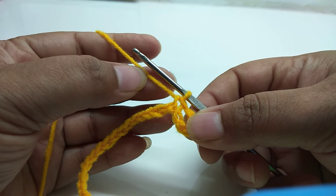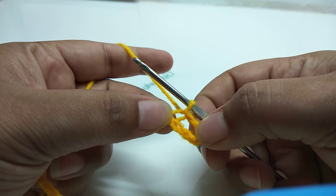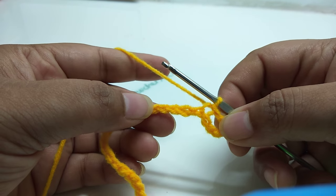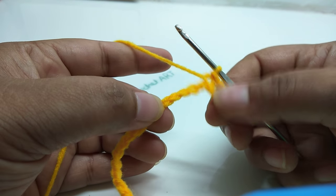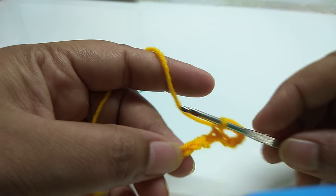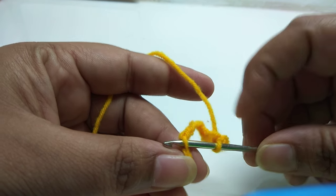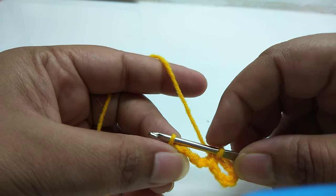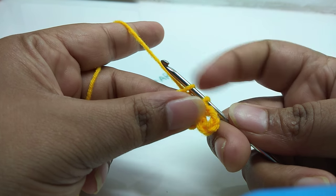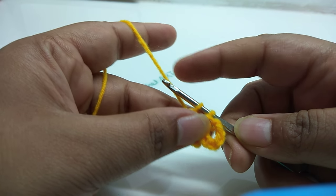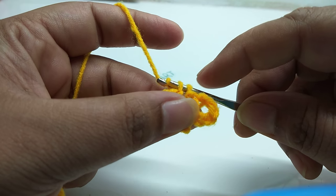In slip stitch we simply transfer this yarn from one chain stitch to another current chain stitch. Let's do it again. Suppose here I have to do slip stitch again. Skip one, two, three, and four chains, and in the fifth chain insert your hook like this. And again you need to transfer this woolen yarn from these two holes. You need to transfer this woolen yarn from this two holes. Once again I am showing you.